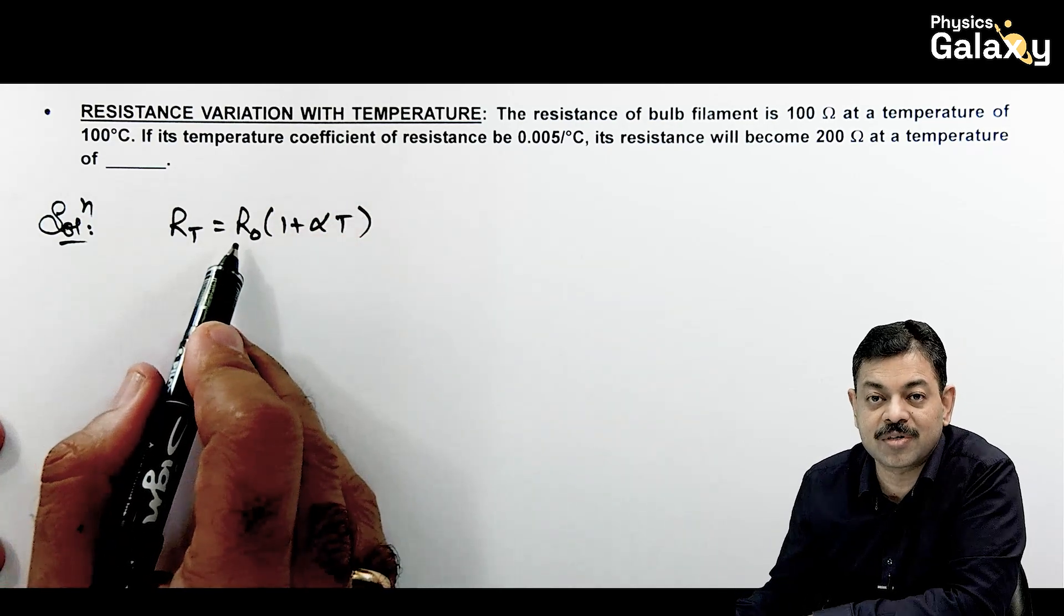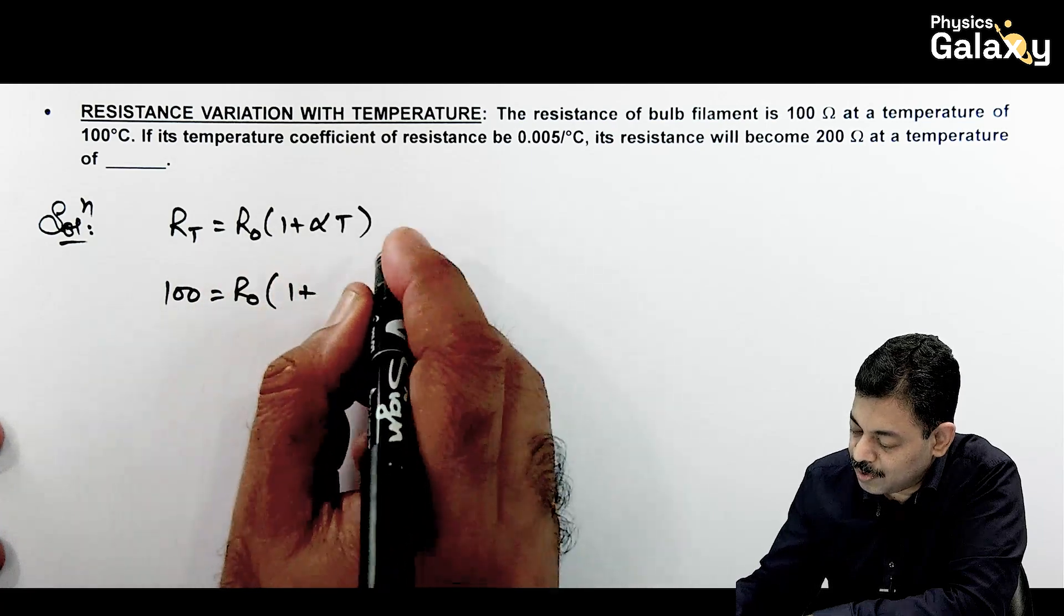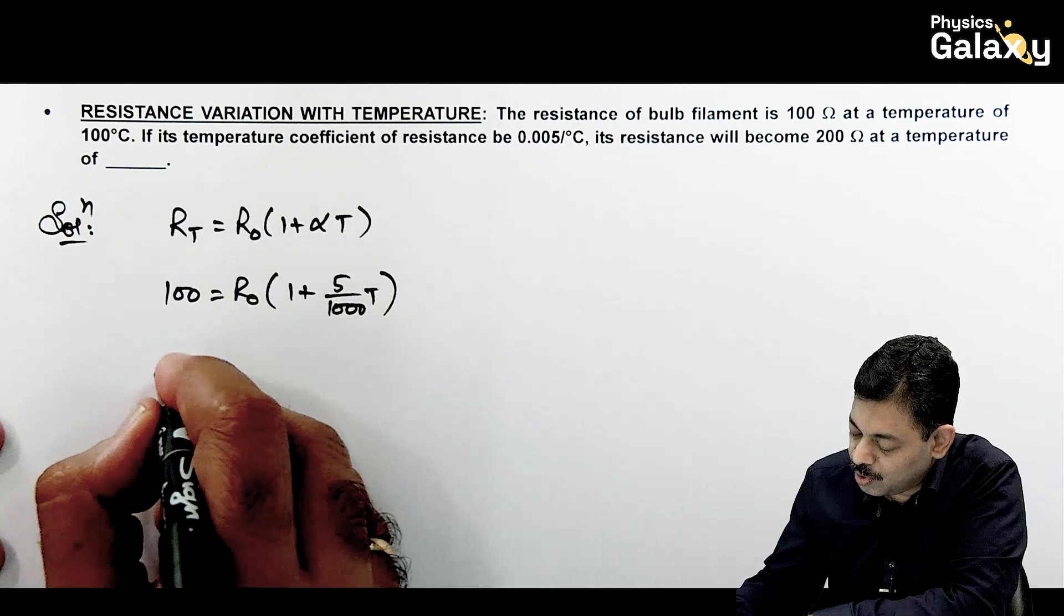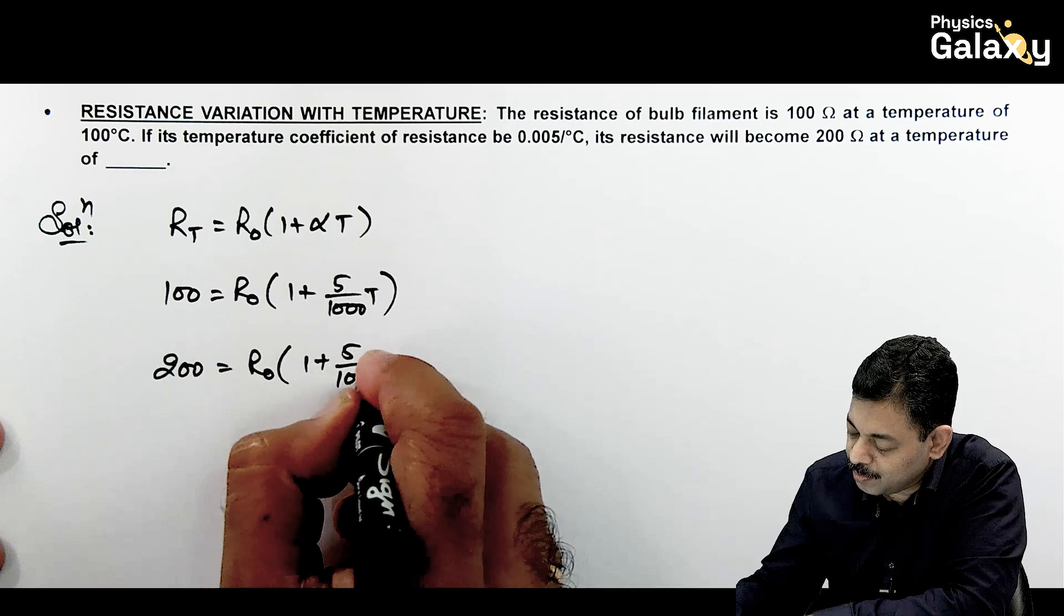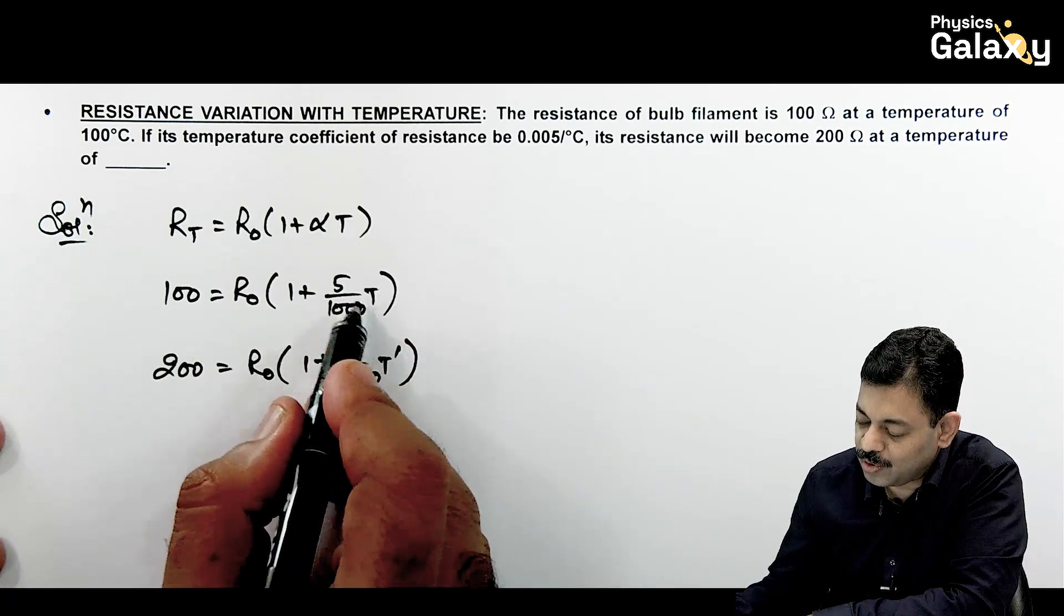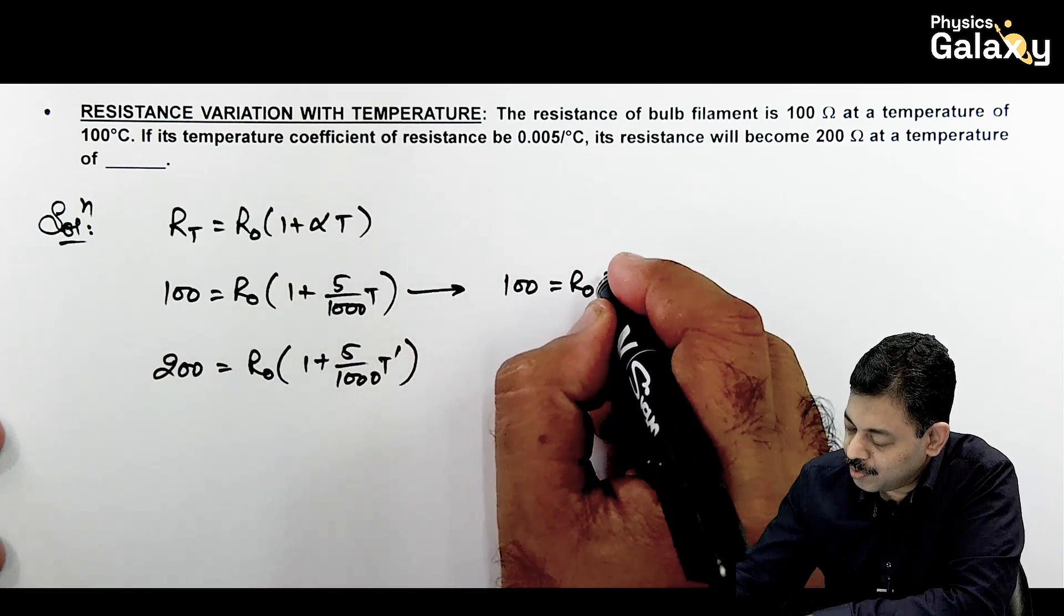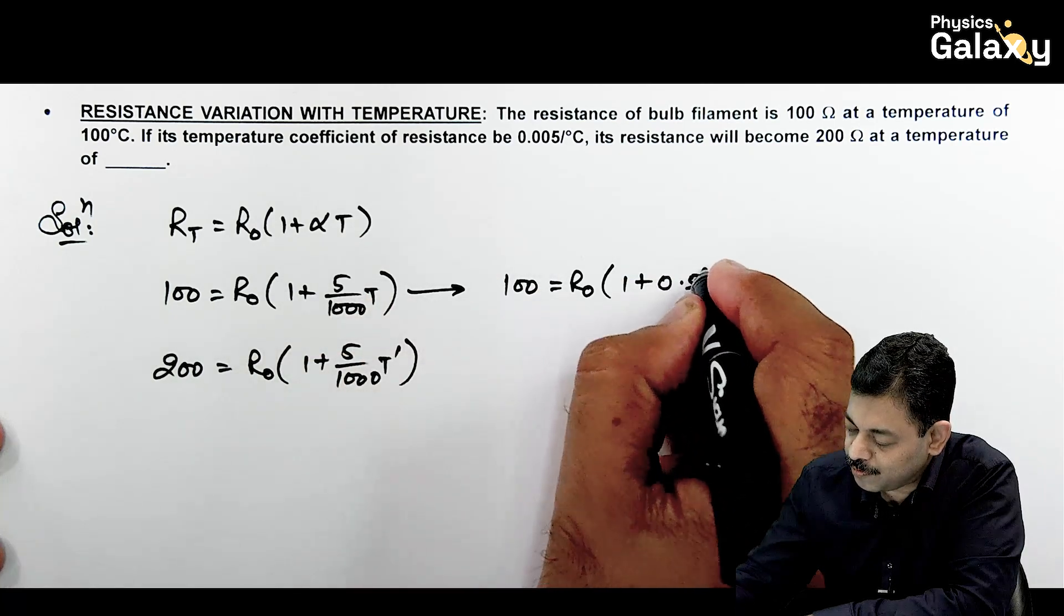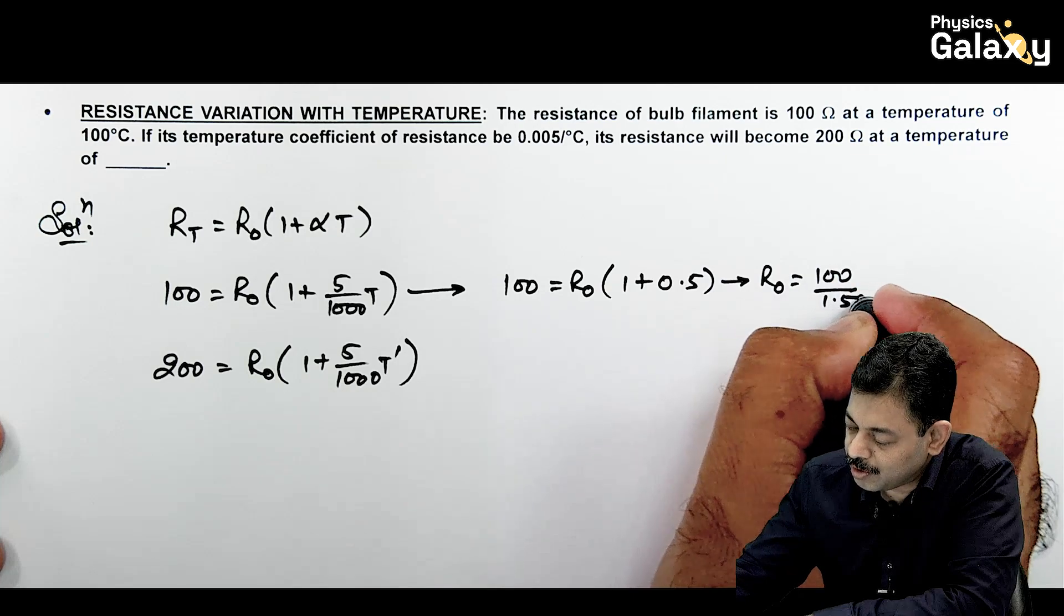If R0 is the resistance at 0 degree centigrade, so if I use this: 100 equals R0 times 1 plus alpha is 5 by 1000 multiplied by T, and 200 is R0 times 1 plus 5 by 1000 multiplied by T dash. Here we have T dash we need to find, and T ka value is already 100 given. So this gives you the value of R0 directly which is 100 divided by 1.5.